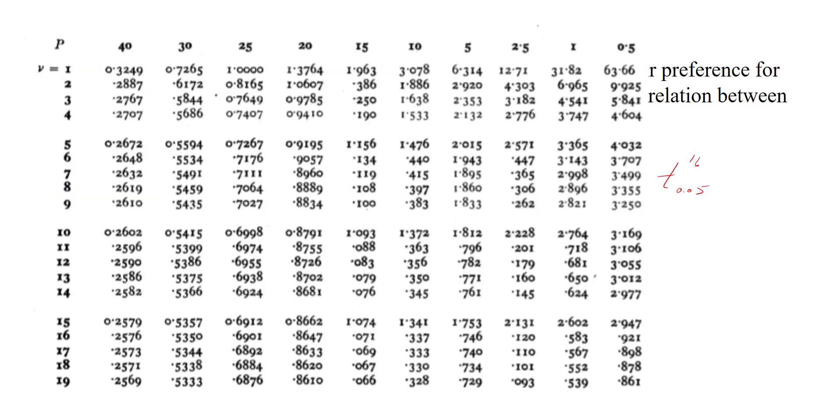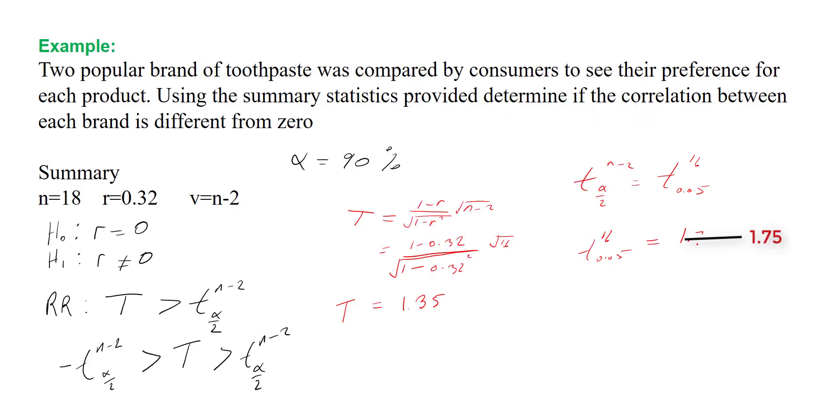From our t distribution table, we can see that t(16, 0.05) equals 1.746. Now we're going to refer back to our rejection region to see if we will accept or reject our null hypothesis.